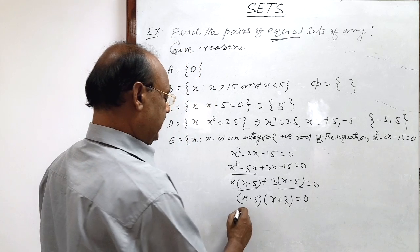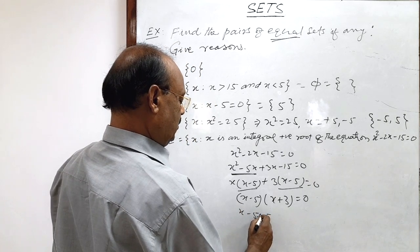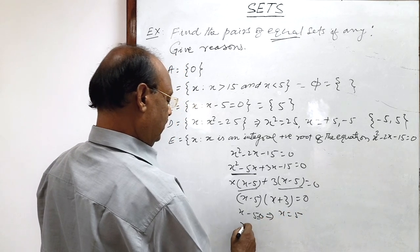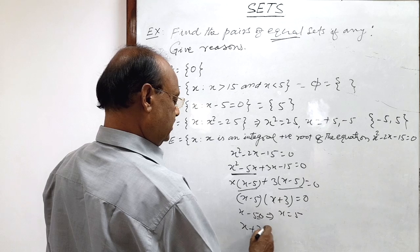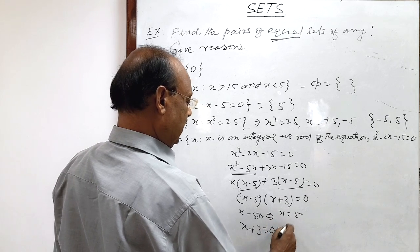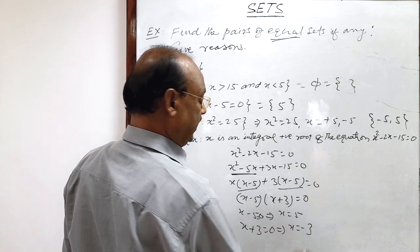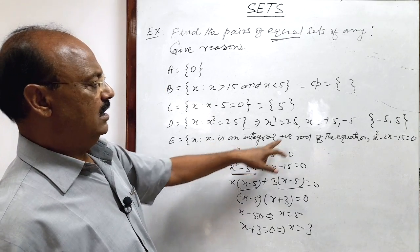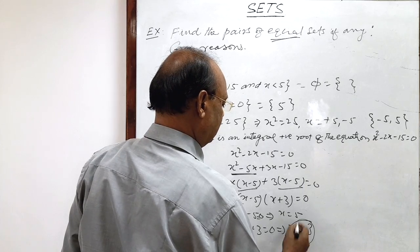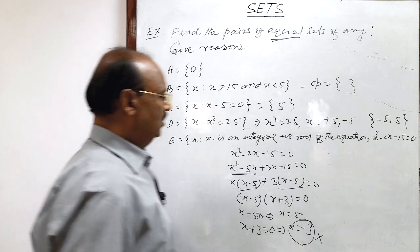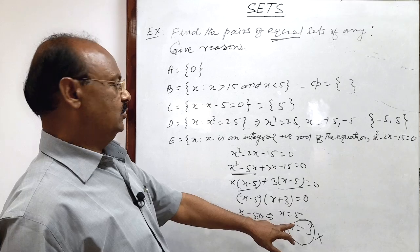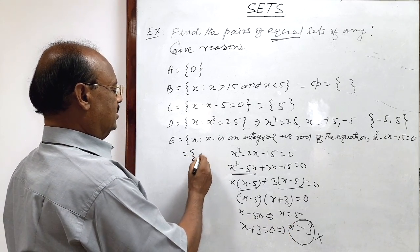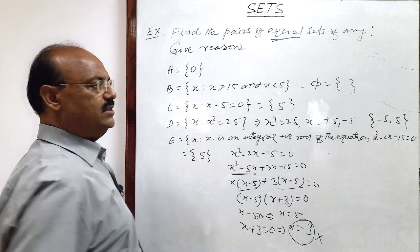When x minus 5 is equal to 0 this implies x is equal to 5. And when x plus 3 is equal to 0 this implies x is equal to minus 3. But here condition is x is an integral positive root. So this is not acceptable because this is minus 3. So here we are getting x is equal to 5. So this set E is a set consisting of only one element 5.